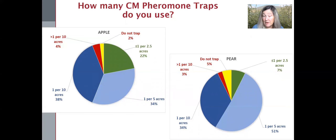One issue that keeps coming up is how many traps people put out, and I'm addressing that in my next talk also. I've grouped these by apple versus pear, but actually the results are pretty similar. The majority of those polled had one trap every 5 to 10 acres,